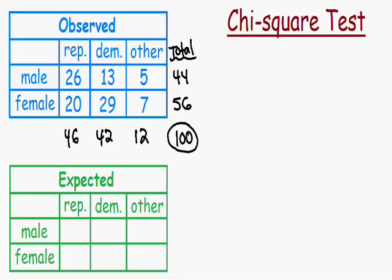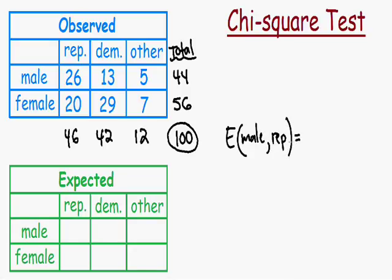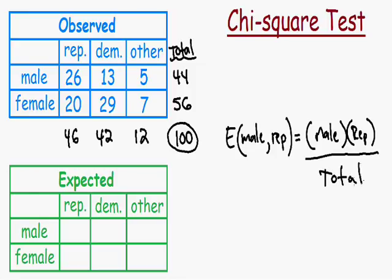Now we're going to use all this information to fill in our expected table — all of the values that we expect. Let's start with male Republicans. The formula for the expected number of male Republicans is: the total number of males, multiplied by the total number of Republicans, all divided by the grand total.